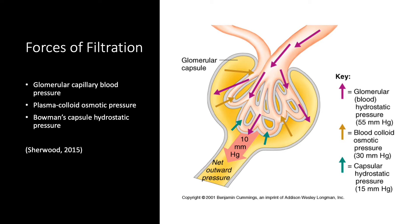Glomerular capillary blood pressure is the force that favors filtration. It is the pressure exerted by the blood flowing within the glomerular capillaries, and ultimately depends on contraction of the heart, which is the source of energy that produces glomerular filtration. Another factor affecting this pressure is resistance to blood flow offered by the afferent and efferent arterioles. The high resistance offered by the efferent arterioles means blood pressure does not fall along the length of the glomerular capillaries as it does along other capillaries, and it is the major force producing glomerular filtration.